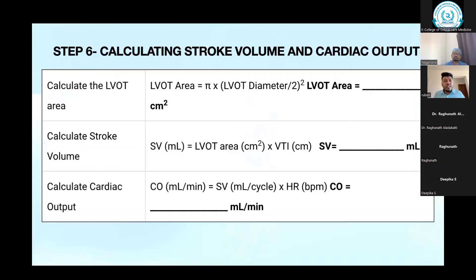Coming to calculating stroke volume and cardiac output: we got the LVOT area in cm squared, then we got the VTI. Stroke volume equals LVOT area multiplied by VTI — giving you the result in mL. Cardiac output equals stroke volume multiplied by heart rate — in mL per minute.